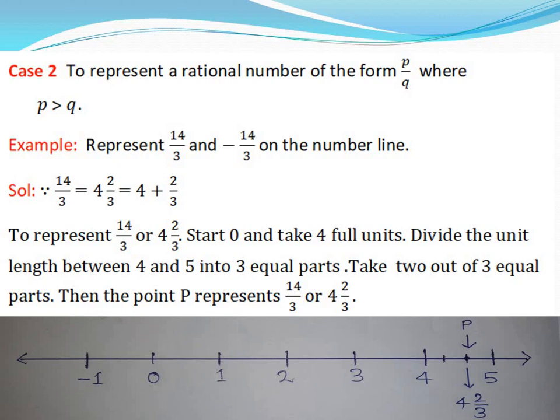Solution: 14 by 3 equals 4 and 2 by 3, which equals 4 plus 2 by 3. To represent 14 by 3, start from 0 and take 4 full units, then divide the unit length between 4 and 5 into 3 equal parts. Take 2 out of 3 equal parts, then point P represents 14 by 3, or 4 and 2 by 3.